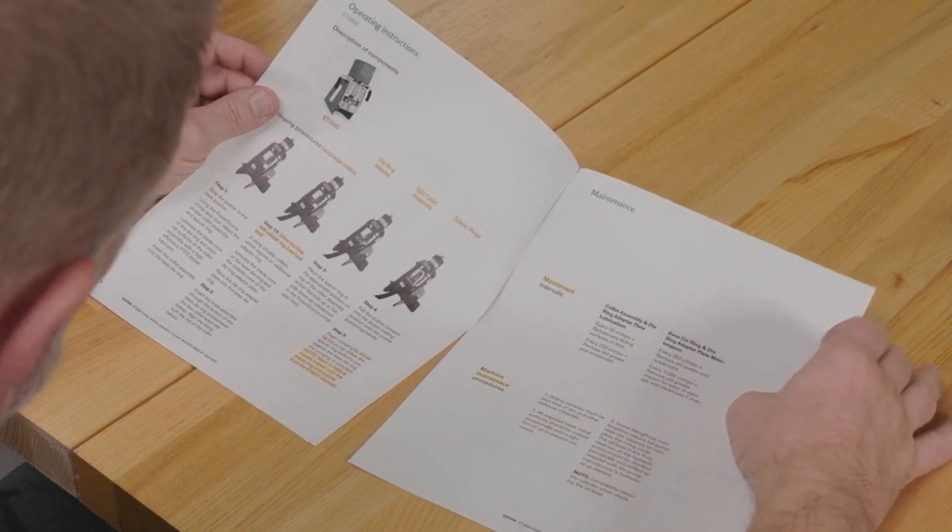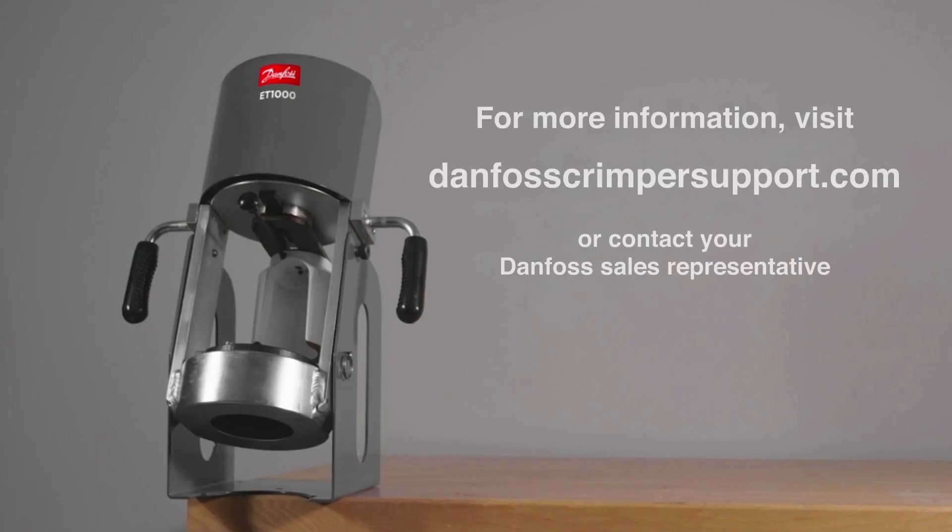For more information on the Danfoss ET-1000 and our other hardworking assembly machines, as well as tooling and technical support, visit Danfoss crimpersupport.com.